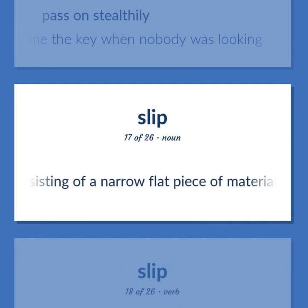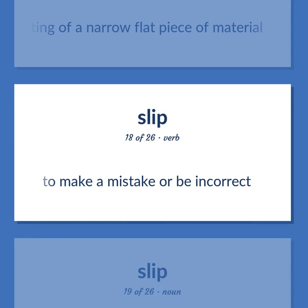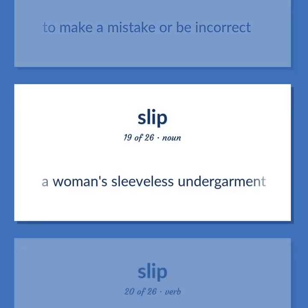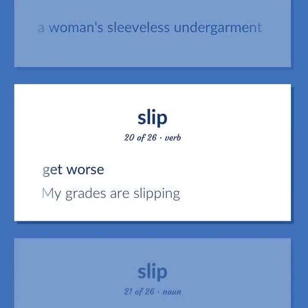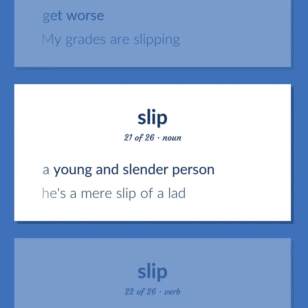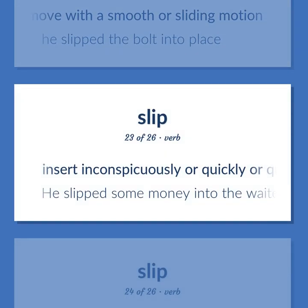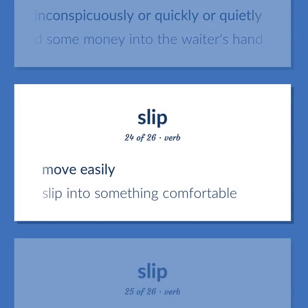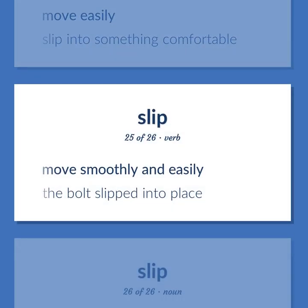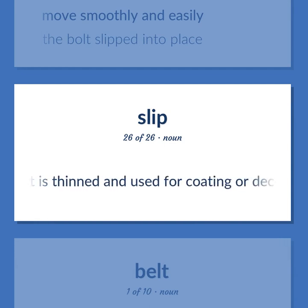Artifact consisting of a narrow flat piece of material. To make a mistake or be incorrect. A woman's sleeveless undergarment. Get worse. My grades are slipping. A young and slender person. He's a mere slip of a lad. Cause to move with a smooth or sliding motion. He slipped the bolt into place. Insert inconspicuously or quickly or quietly. He slipped some money into the waiter's hand. Move easily. Slip into something comfortable. Move smoothly and easily. The bolt slipped into place.